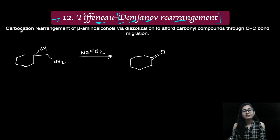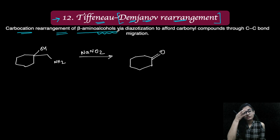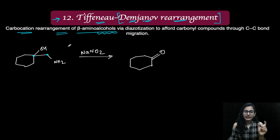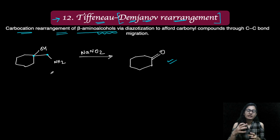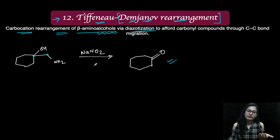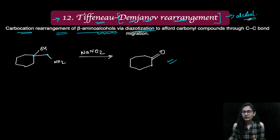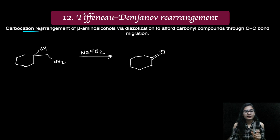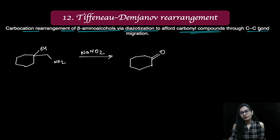First of all, what is this reaction? It is again a carbocation rearrangement of beta-amino alcohol, so we also have the alcohol group. In the Demjanov rearrangement we did not have it. After the rearrangement, the alcohol part is going to give us the ketone. In the Demjanov rearrangement we only had the amine group getting removed and the carbocation formed because of the diazotization — there was no OH within the molecule. Maybe later water was attacking over it giving us alcohol. So in the Demjanov rearrangement we were getting alcohol as the final product, but in the Tiffano-Demjanov rearrangement we are going to have the ketone as the final product.